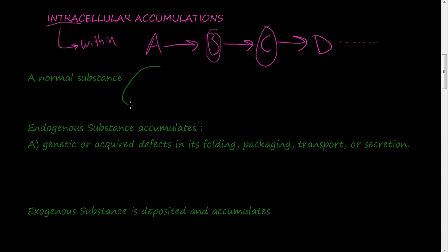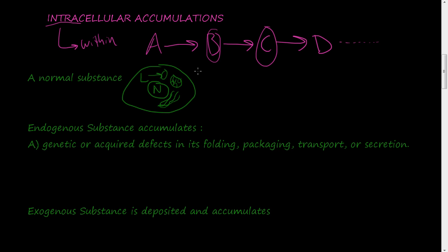If I have a normal cell here with the nucleus and some organelles - a mitochondria and a lysosome - cells produce stuff. That's the whole job of some cells, just to produce. They're like a manufacturing plant that produces cell phones, for example. If you have a manufacturing plant, all it does all day is produce cell phones.